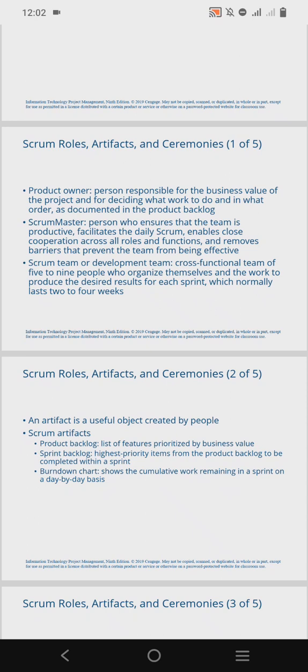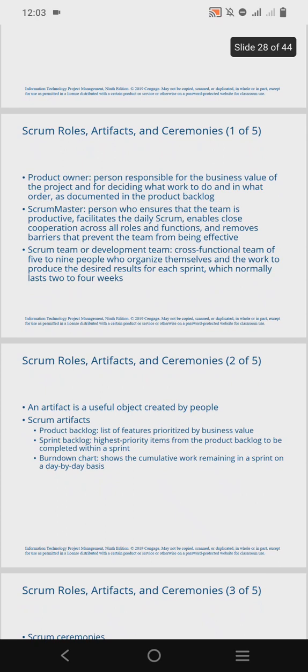Out of the list of features prioritized in the product backlog, the ones with the highest priority are moved to the sprint backlog to be completed within a sprint. The burndown chart shows the cumulative work that is remaining in the sprint on a daily basis.